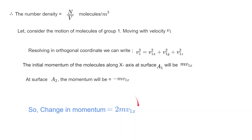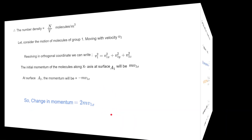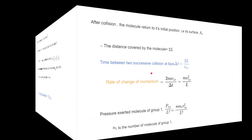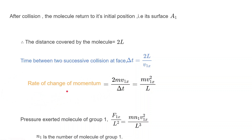After the collision with the surface, the time taken to return is 2l/v₁ₓ. So the rate of change of momentum is equal to 2mv₁ₓ divided by Δt, which equals mv₁ₓ²/l. This is the rate of change of momentum.